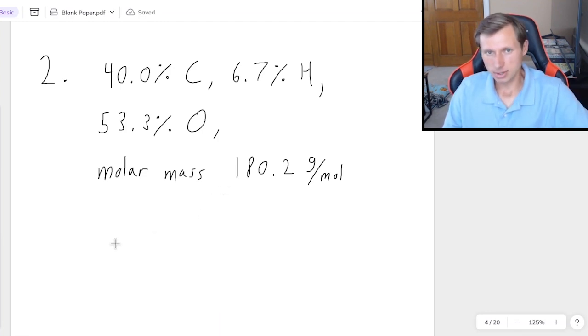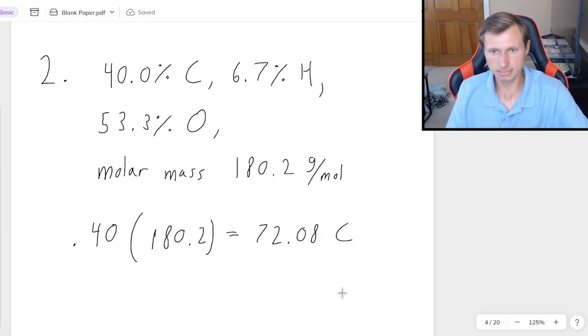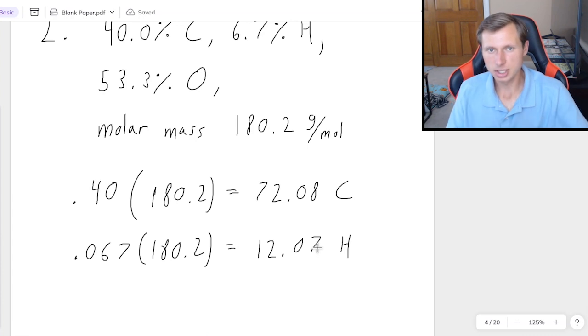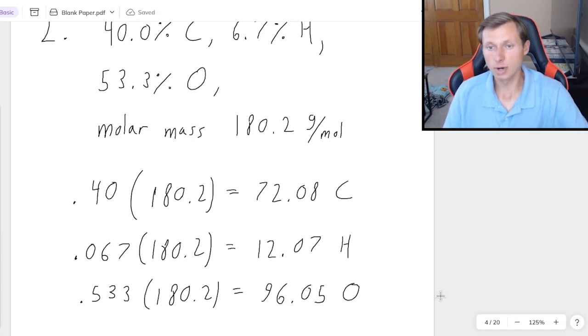Okay, here's what we do. First, multiplying each of these percentages by the total 180.2. Start with carbon, 40% is really just 0.4 times 180.2. That's going to be 72.08 for carbon. For hydrogen, 6.7% is really 0.067 times 180.2, and that's going to get us 12.07 for hydrogen. And finally, oxygen, that's 0.533 times 180.2, which gives us 96.05 for oxygen.